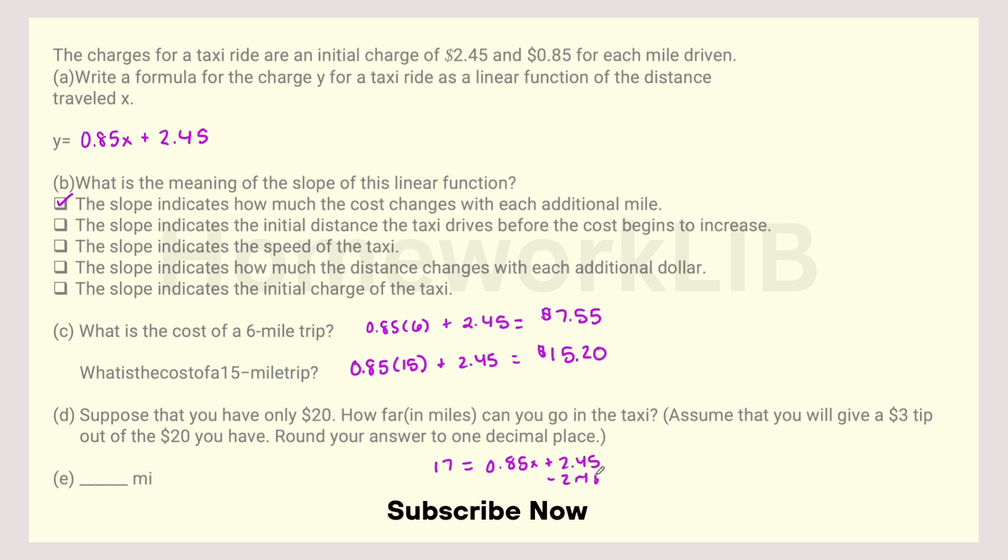Subtract $2.45. So $17 minus $2.45, and that's $14.55 equals $0.85X. Divide by 0.85, and that's X equals 17.1. So you can go 17.1 miles.